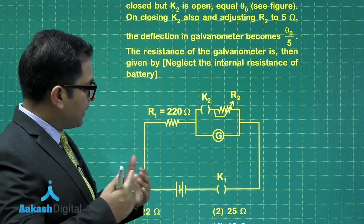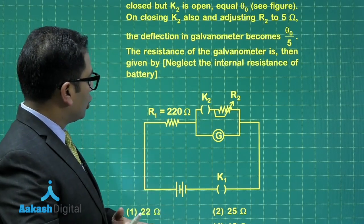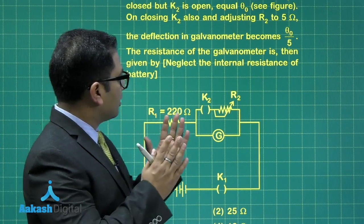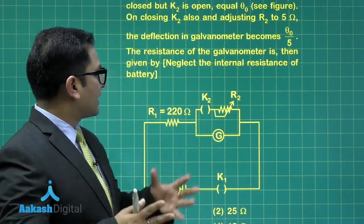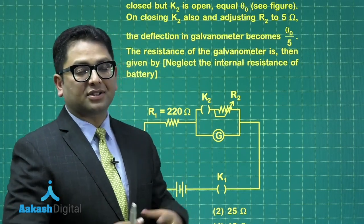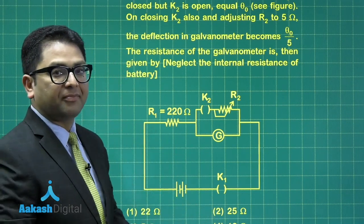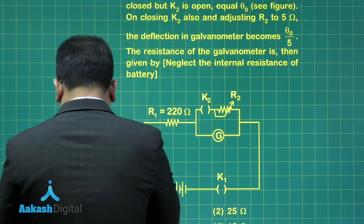Now based on this data, we need to calculate the resistance of the galvanometer, and it says we need to neglect the internal resistance of the battery. So that has made the matter quite simpler.